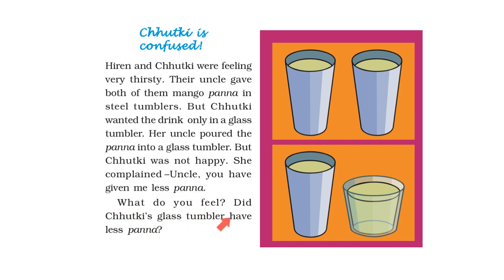What do you feel? Did Chutki's glass tumbler have less panna? We know that liquids take the shape of the container that it is poured in. Chutki's glass tumbler doesn't have less panna. The tumbler is wider and shorter than the steel tumbler, but the quantity of panna is the same in both the steel tumbler and the glass tumbler.